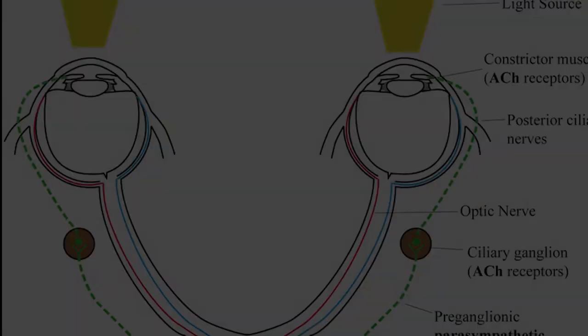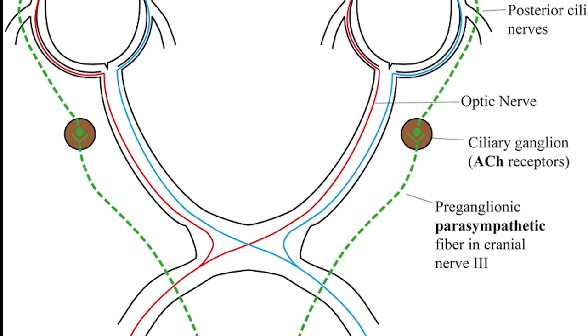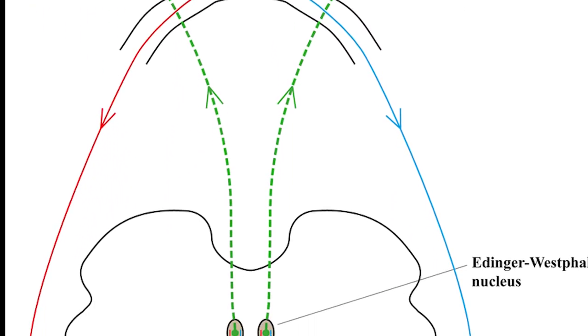It's anything that damages cranial nerve 2 and prevents it from taking the signal back to the pre-tectoral nuclei. So light's not going to get through that system and you're not going to be able to constrict the eye.